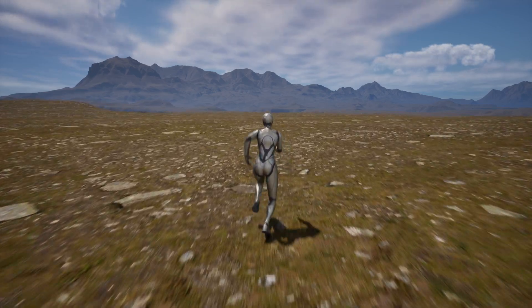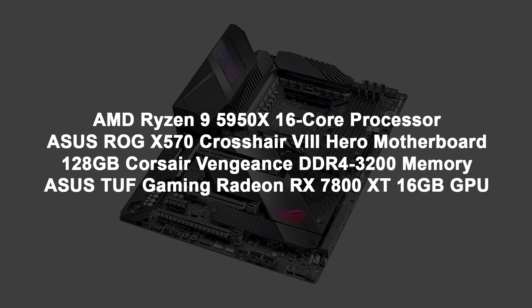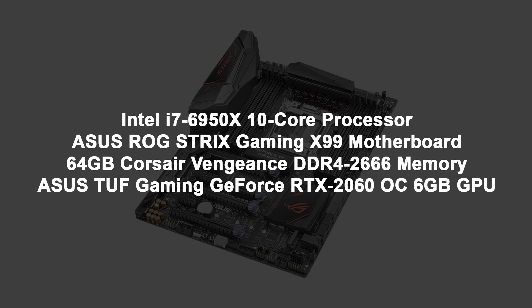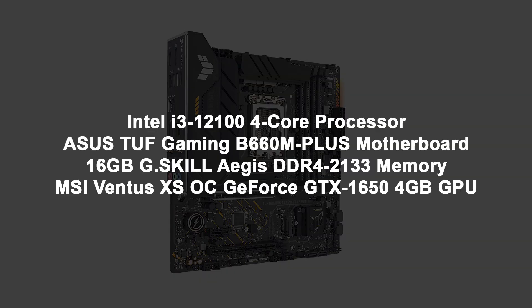The test computers basically represent the high-end with an R9 5950X 16 core, 128 gig RAM, RX 7800 XT 16 gig GPU; the mid-end with an i7 6950X, 64 gig RAM, RTX 2060 6 gig GPU; and the low-end with an i3 12100K 4 core, 16 gig RAM, GTX 1650 4 gig GPU.